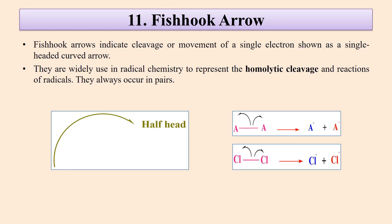Then there is the fish hook arrow. The fish hook arrow indicates the cleavage or movement of a single electron. Here it shows that a bond is homolytically cleaved and one electron goes to one atom and the other electron goes to the other atom.